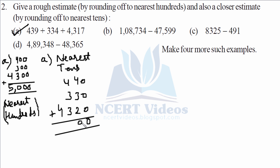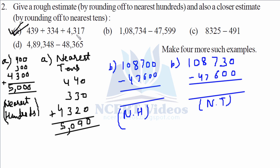Adding these up: six plus four gives ten, carry one, that gives five thousand ninety. Now for part B, we again find the nearest hundreds first, then the nearest tens — focusing on the tens digit for tens rounding and the hundreds digit for hundreds rounding.